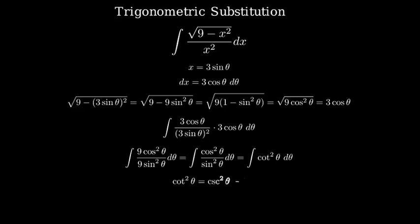We can use the trigonometric identity cotangent squared theta equals cosecant squared theta minus 1. Substituting this identity into our integral, we get the integral of cosecant squared theta minus 1 d theta.